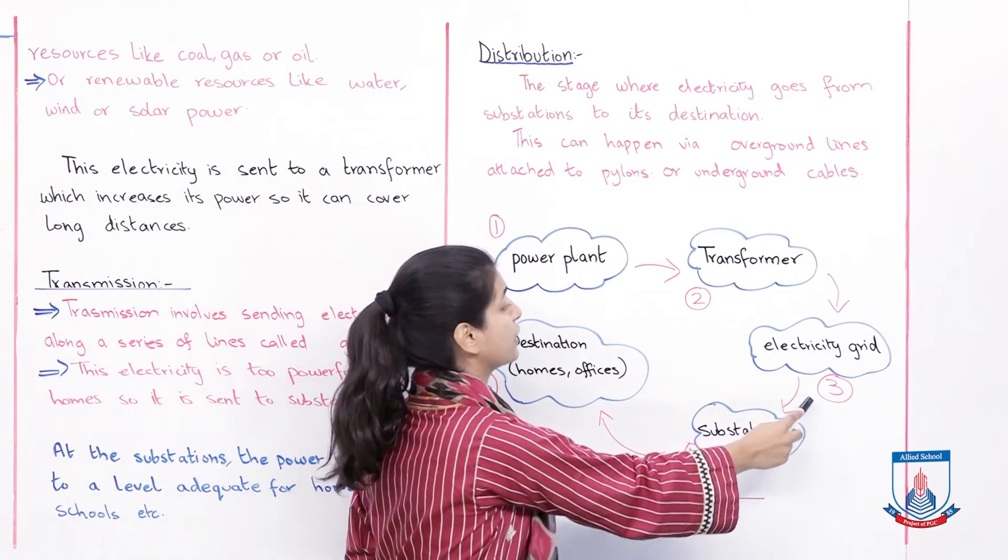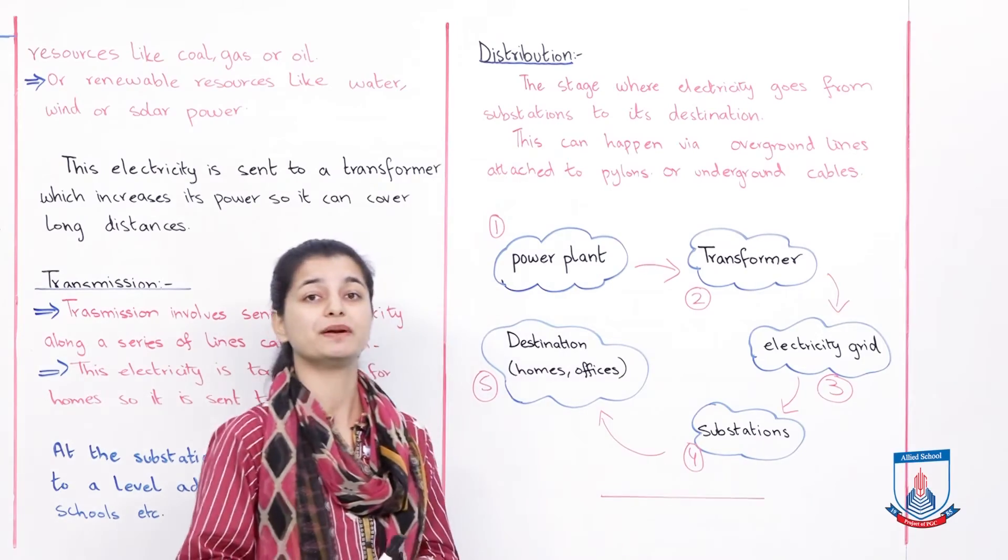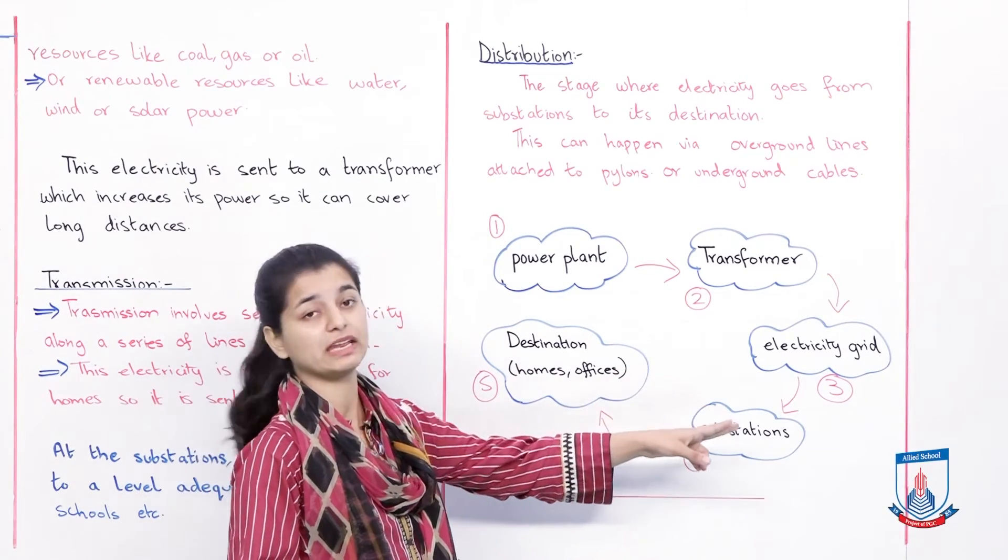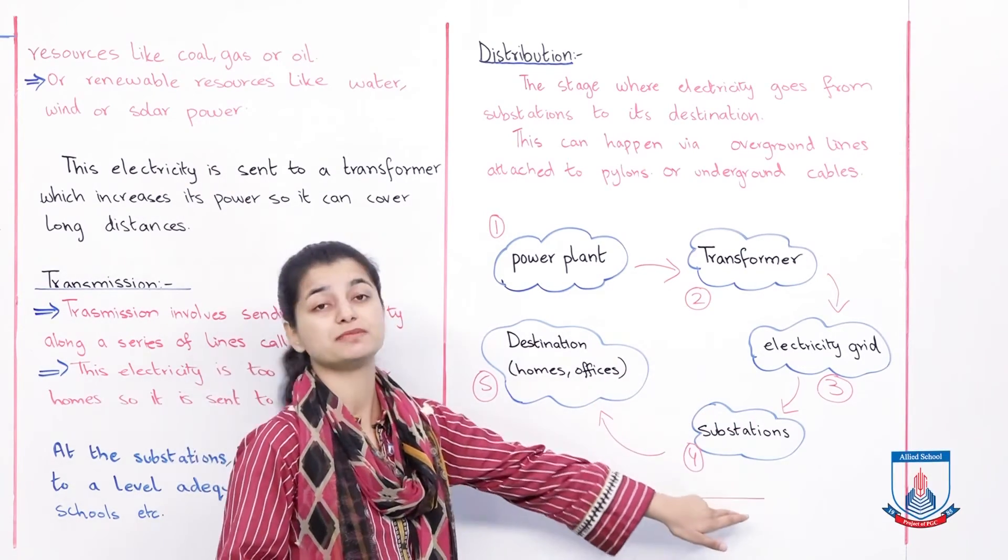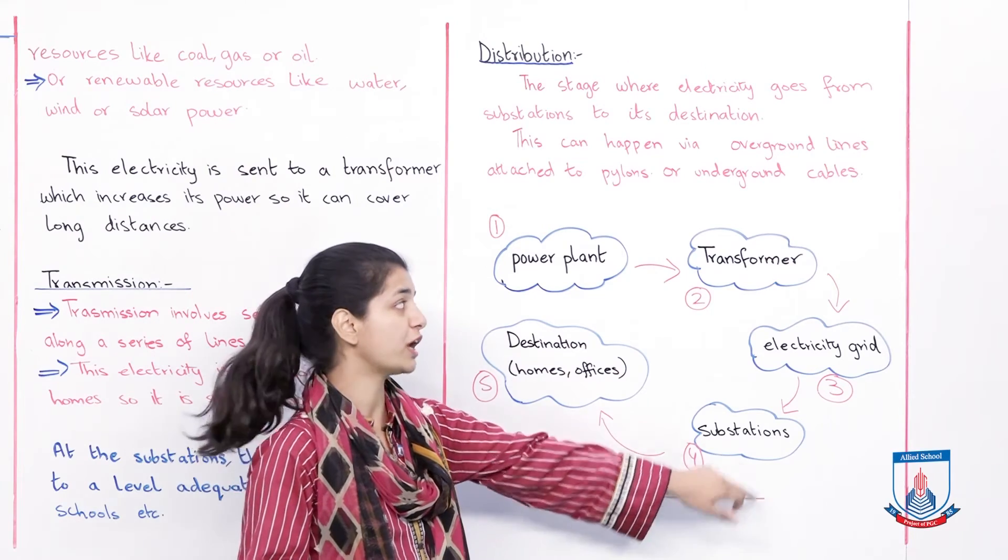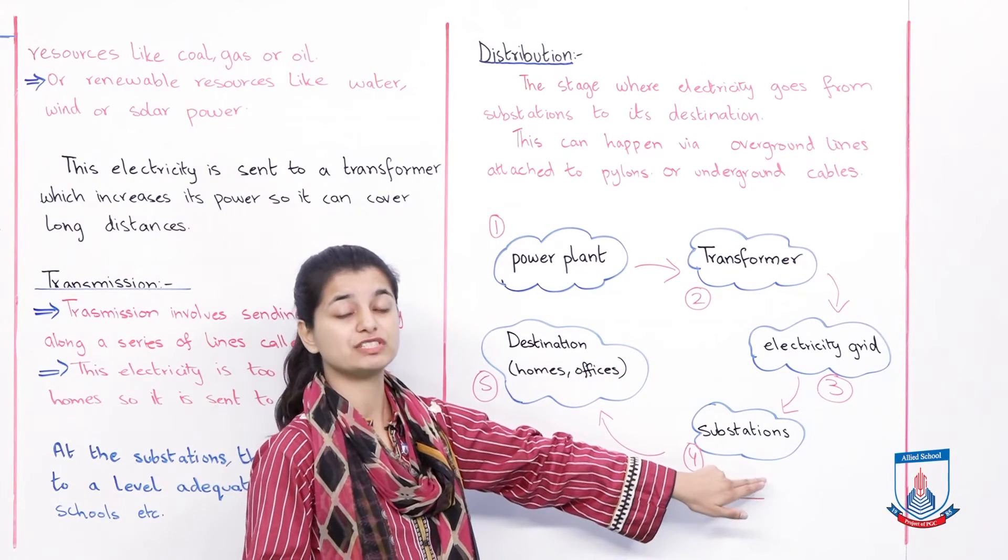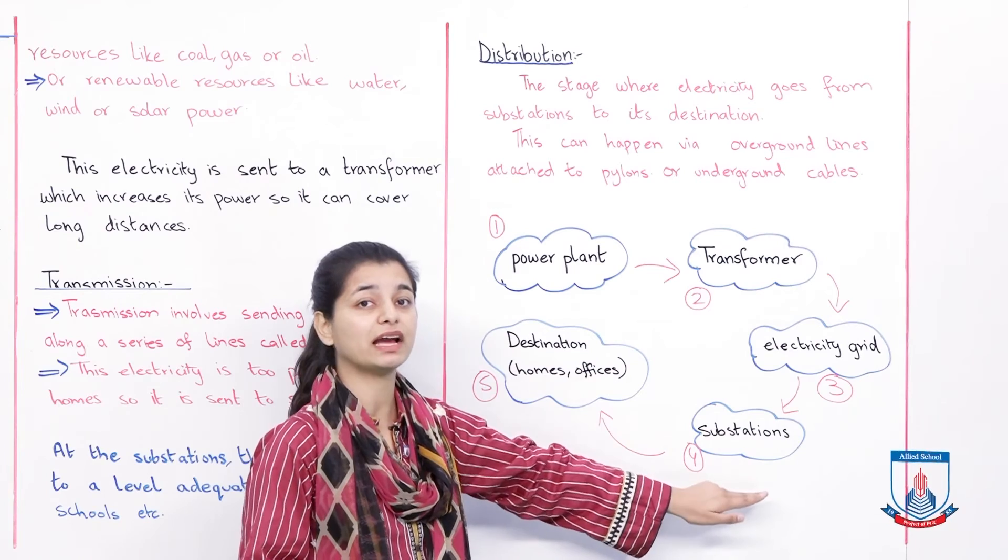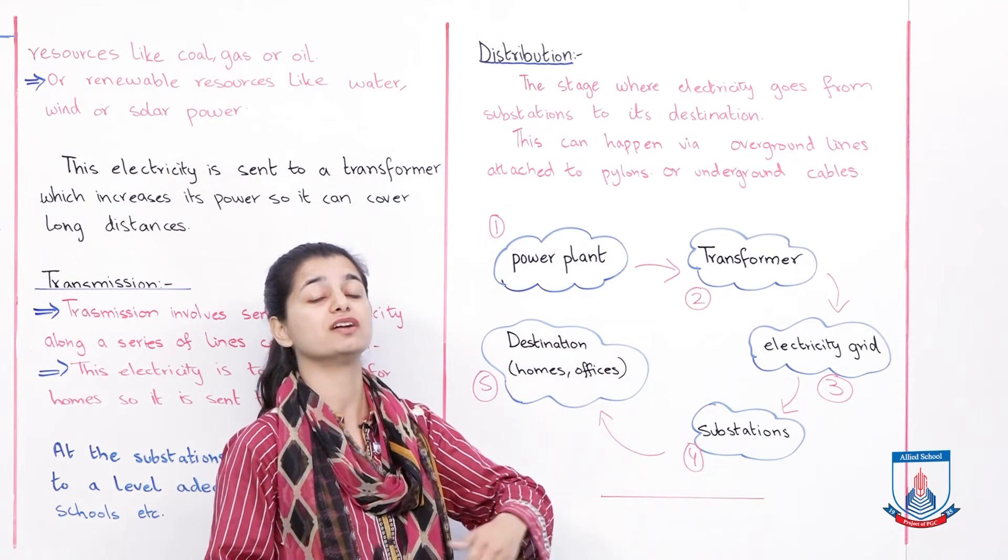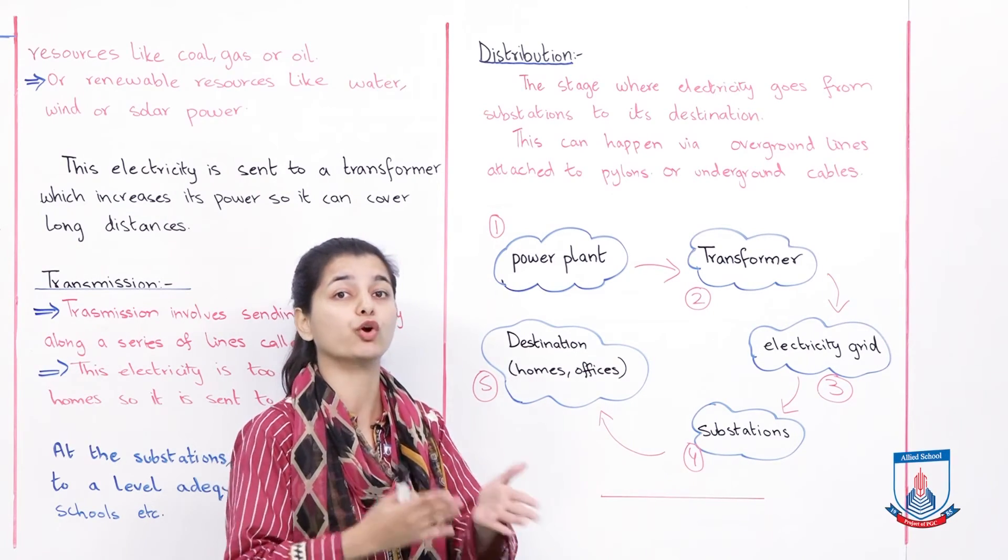After that, from the transformer it goes to the electricity grid. As you can see in the picture, it goes to the electricity grid. After going to the electricity grid, it goes to substations. Substations reverse what the transformer did - they reduce the power to make it adequate enough for buildings and not overly powerful for homes and offices.